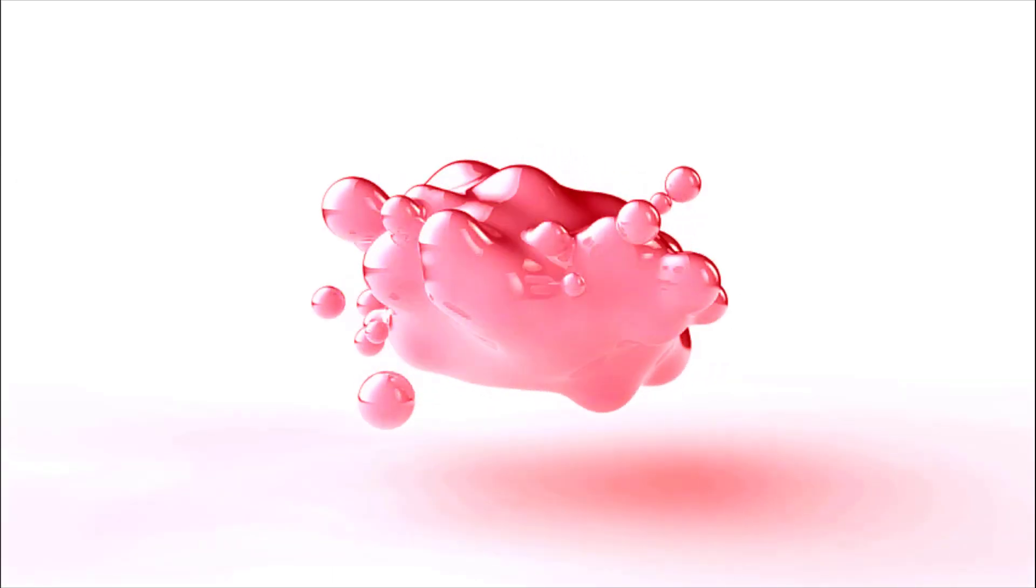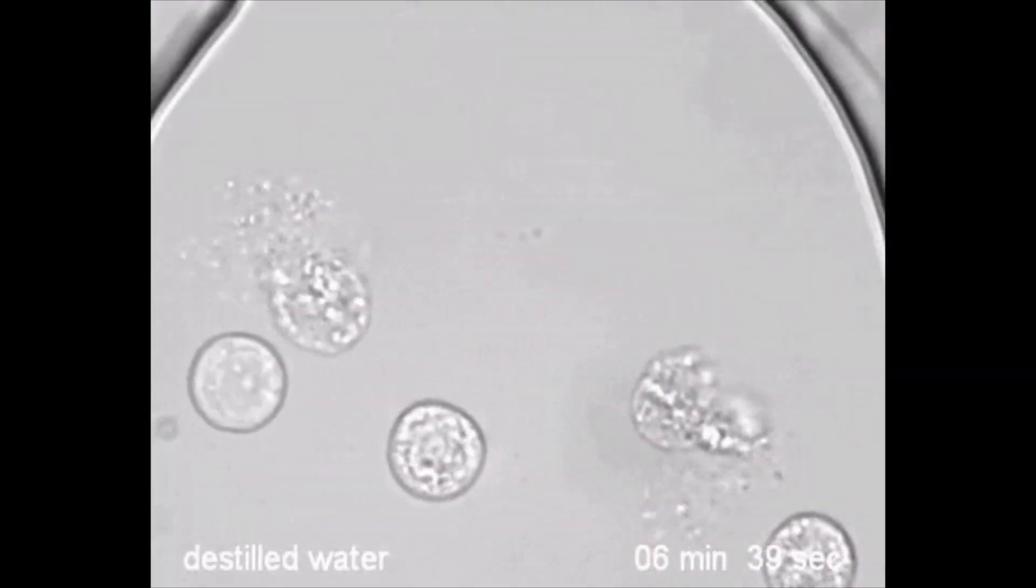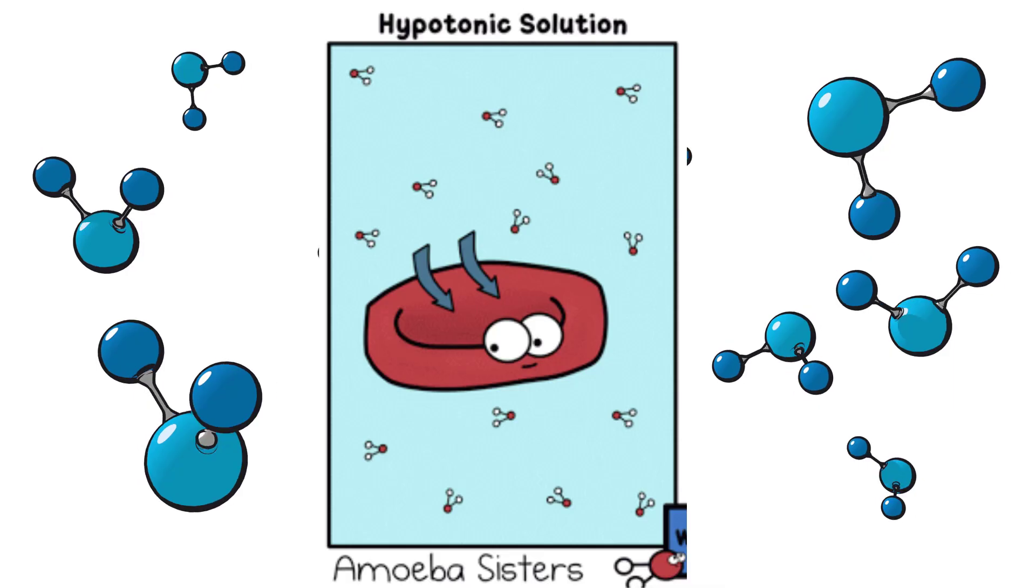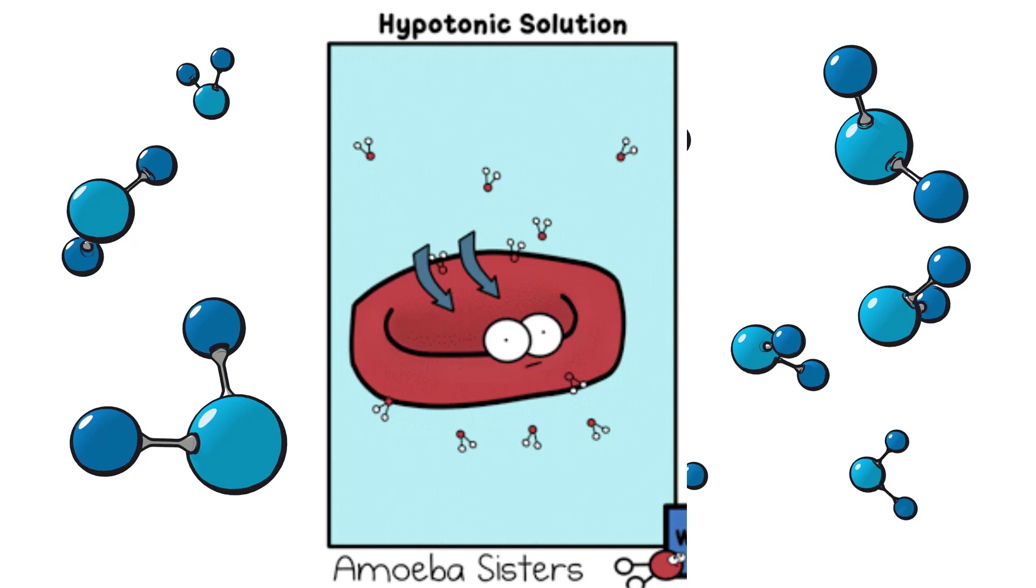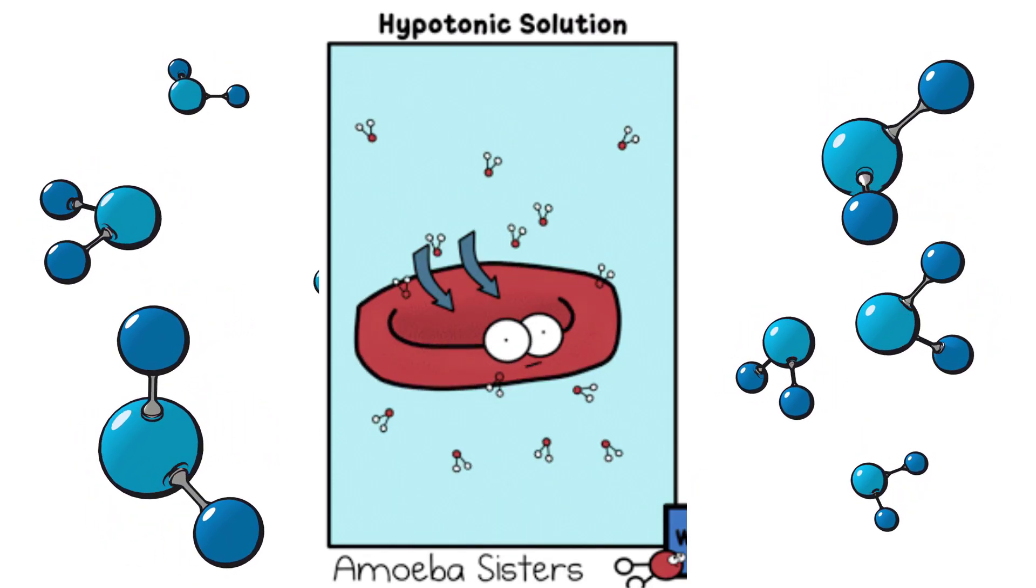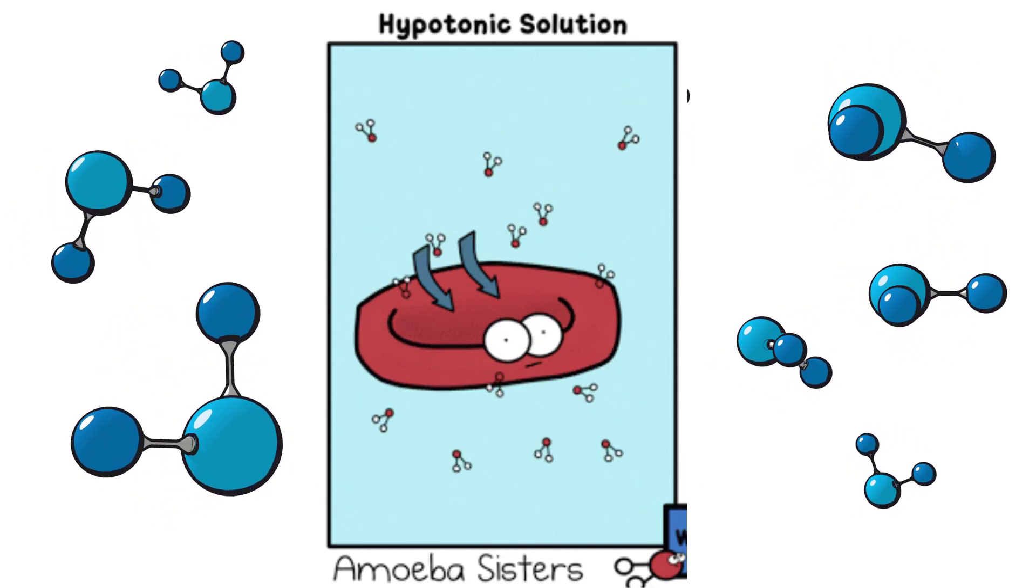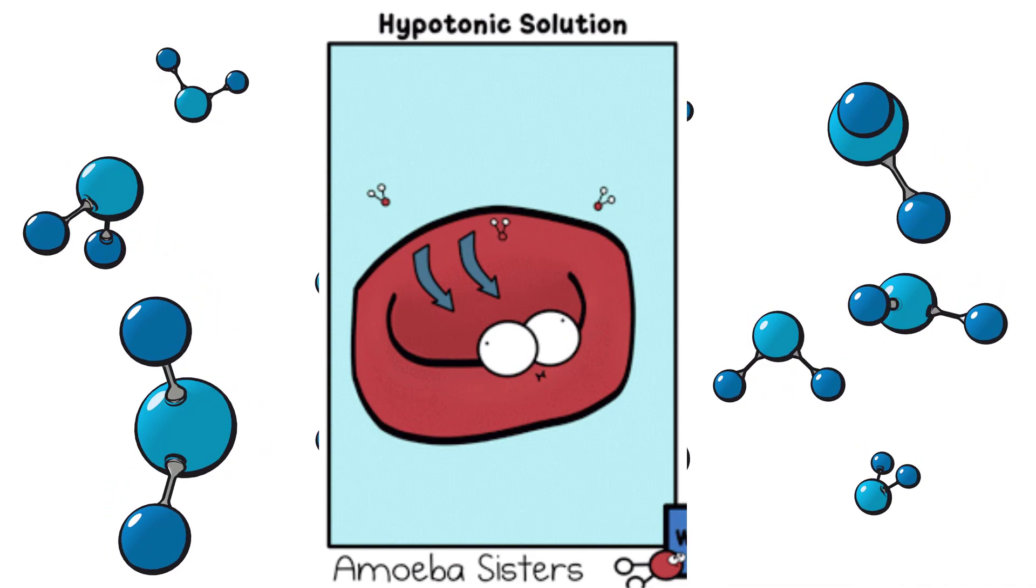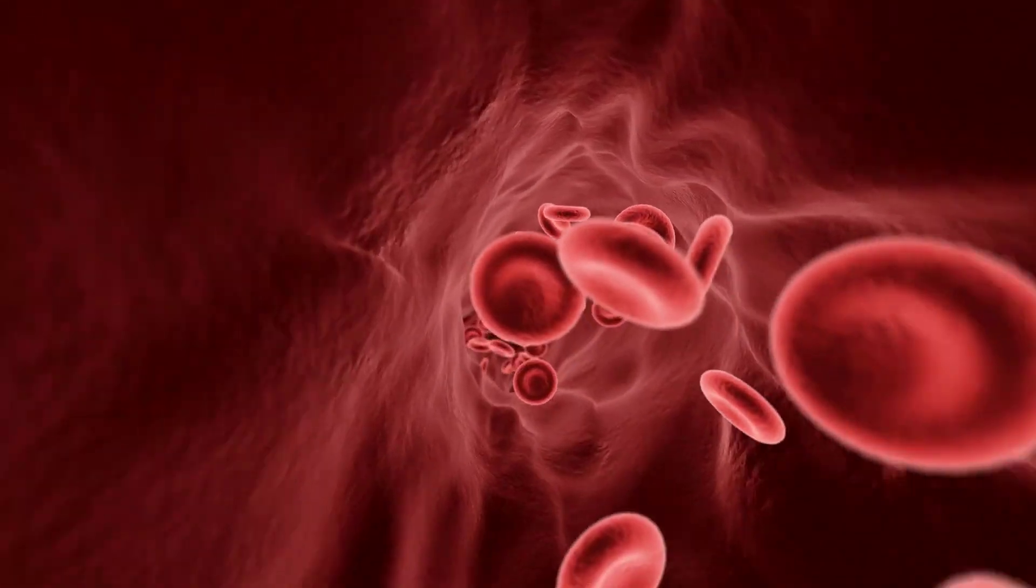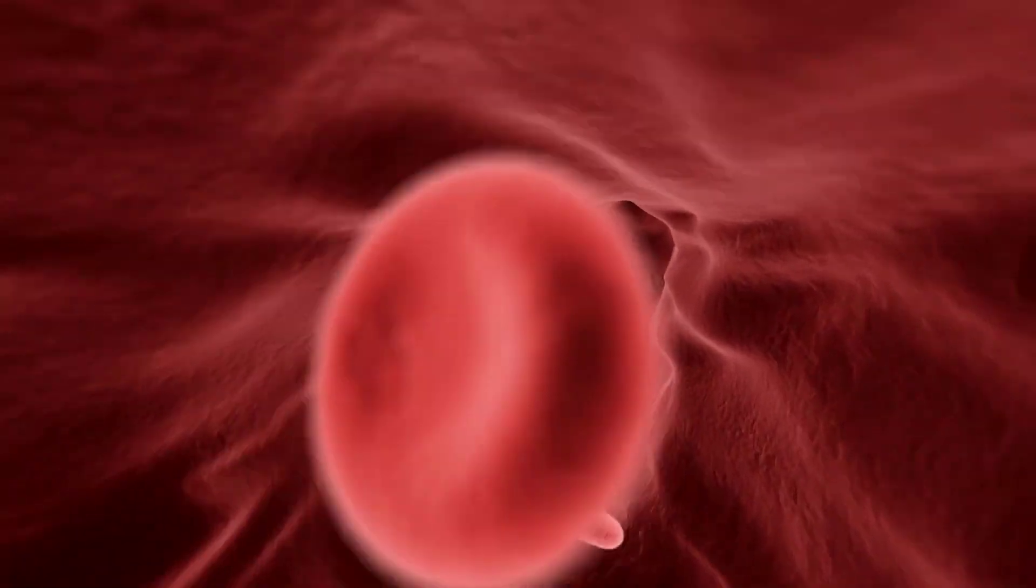Hypotonic solutions cause lysis. If the cell was placed into distilled water, the cell would swell and burst in a process known as lysis. This type of solution is called hypotonic. Lysis would occur because the high concentration of water on the outside of the cell would cause water to flow into the lower concentration of water inside the cell. You should note that the intracellular fluid inside of our cells has about 0.9% salt solution.